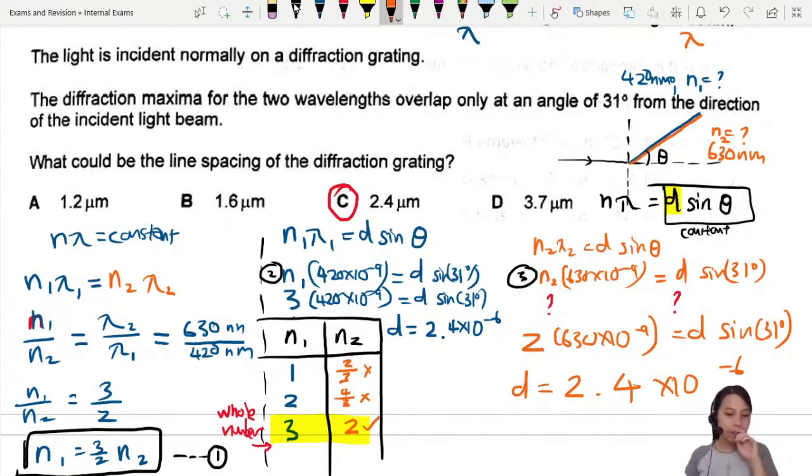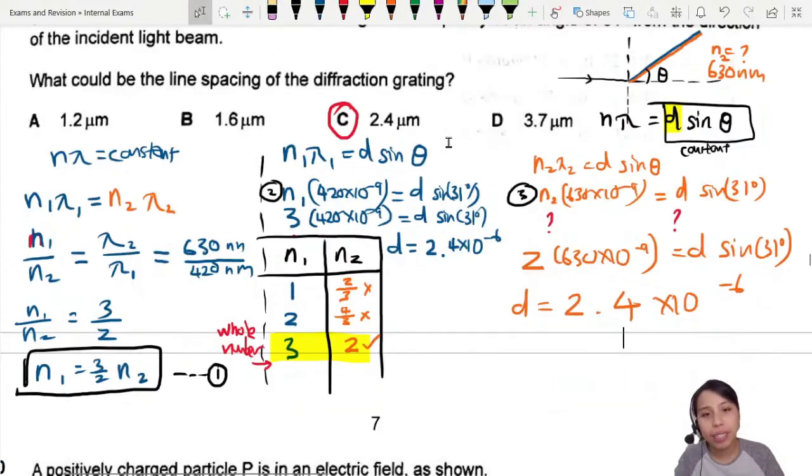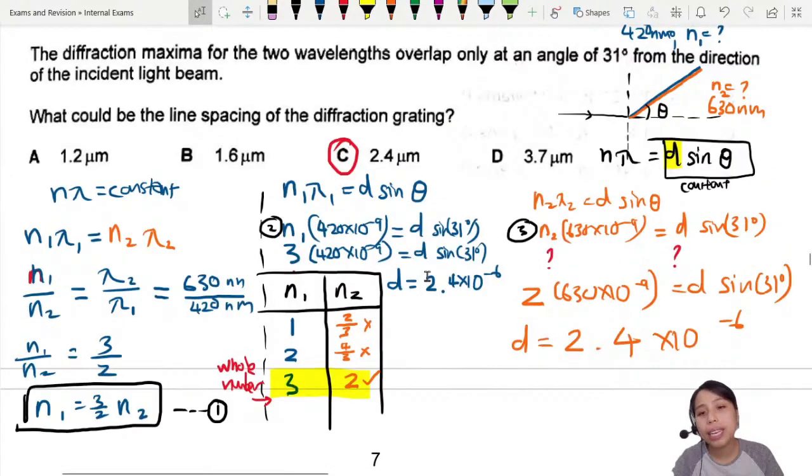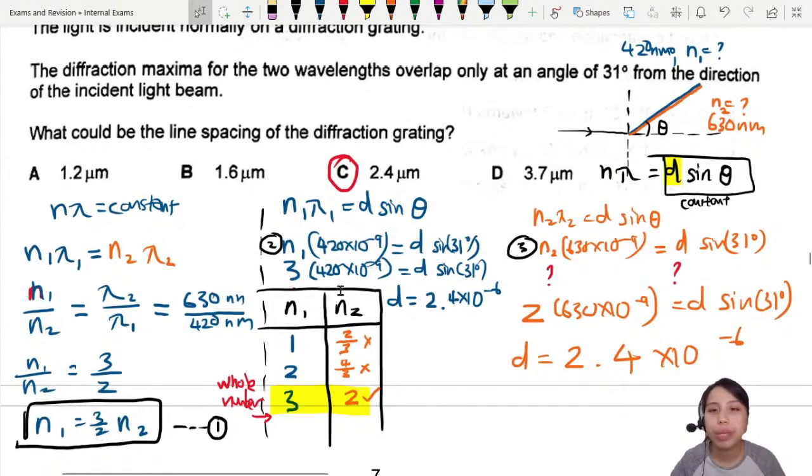If you're not convinced and you say 'but the orders could be any other orders, why must it be 3 and 2?' - if you look at the top right corner up there, it means the blue color one is third order and the orange color one is second order.